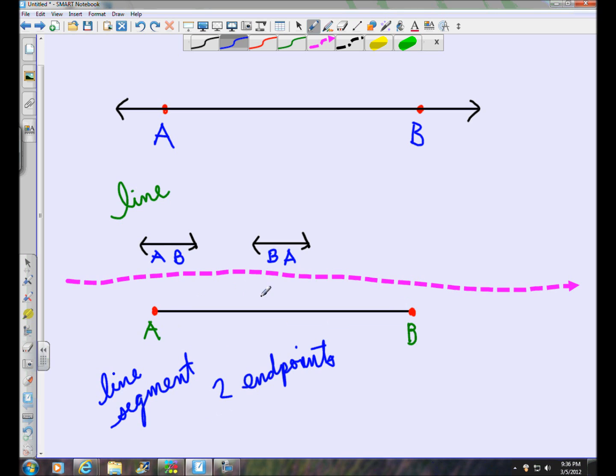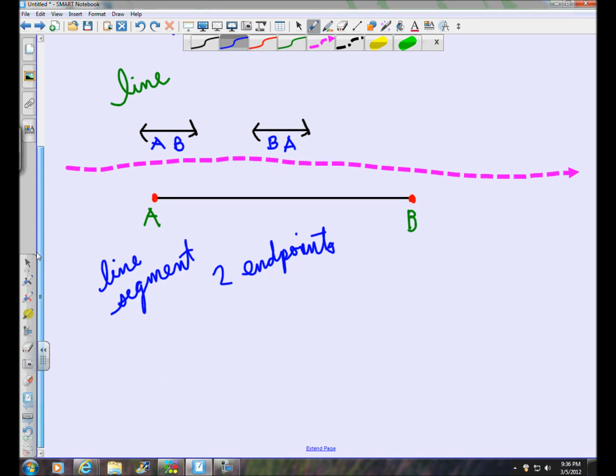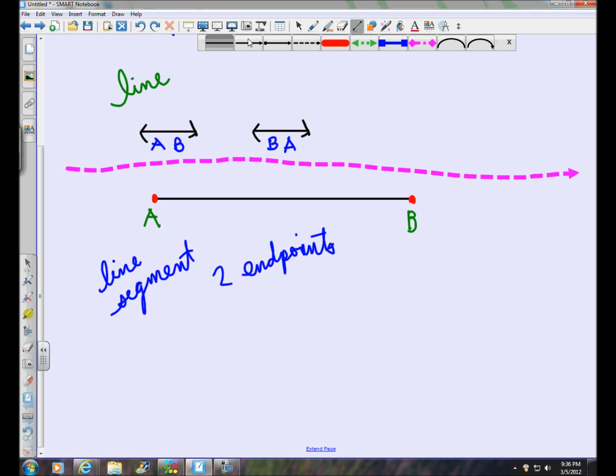And in this case, it's AB. So similar to how we named that line, we can name this line segment by using those two points. So in this case, we've got points. Let me just write those on there for us. We've got points. Line segment AB. And similar to the line, you can name it either direction. It doesn't matter which endpoint you list first.